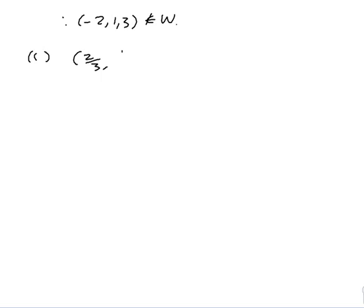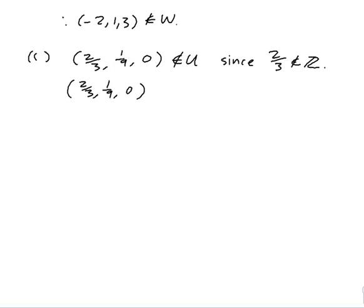Part c: the vector (2/3, 1/9, 0). I know already that's not in U, because to be in U everything has to be an integer, and for example 2/3 is not an integer. Is it in V? The equation for V was x plus 2yz. So x plus 2 times yz — well that's just 2/3, which is not equal to 6. So it's not in V either.